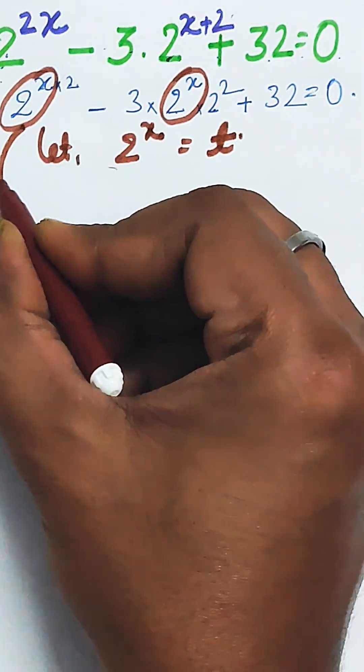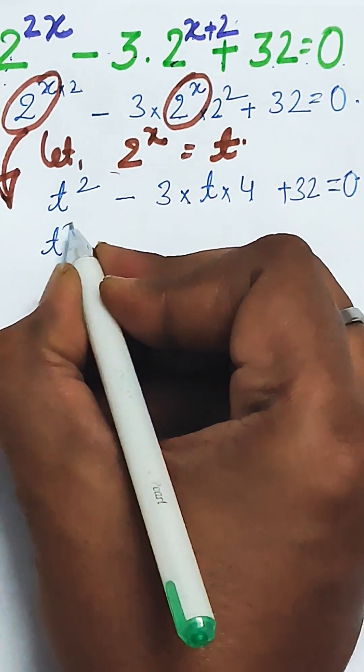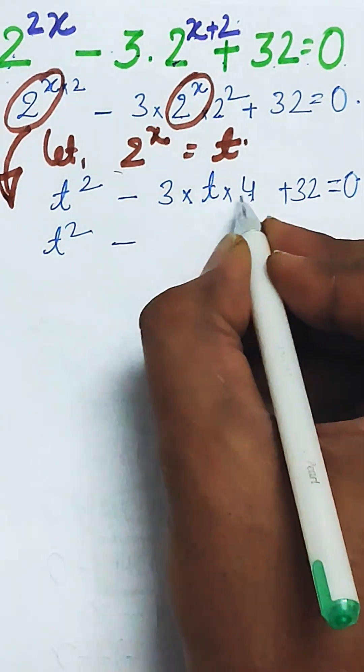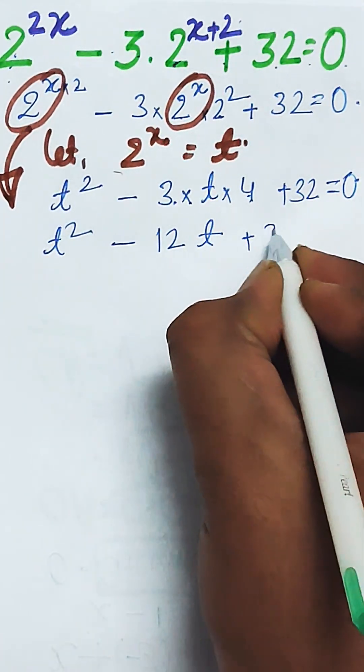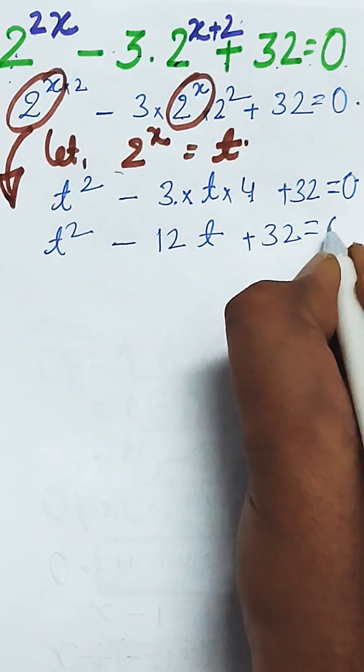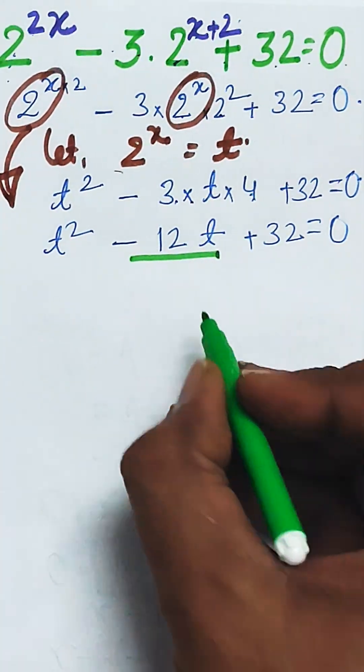Then you can write the above equation as t square minus 3 times 2 square, which is t square minus 12t plus 32 as equal to 0. Now this minus 12t can be split.